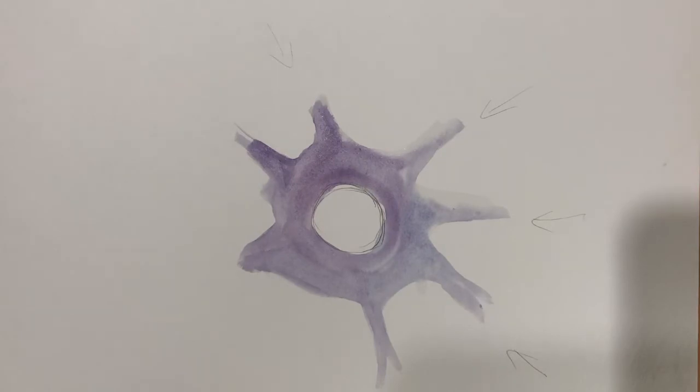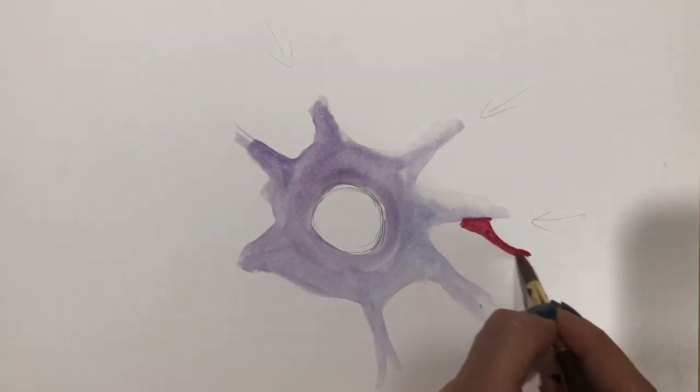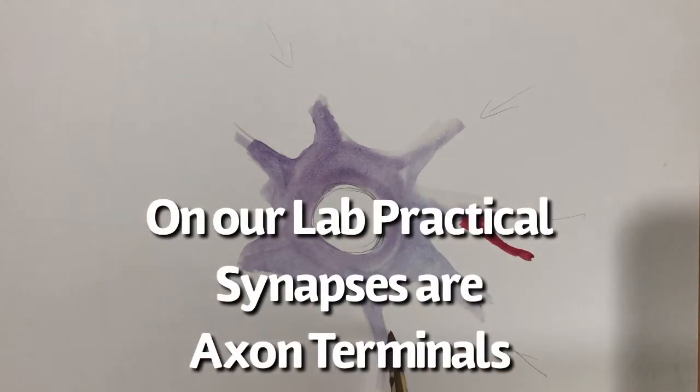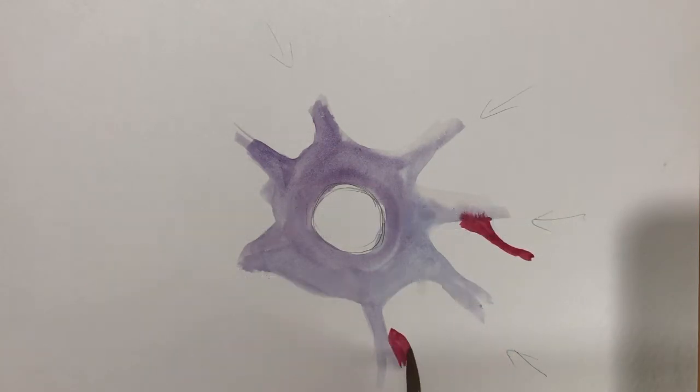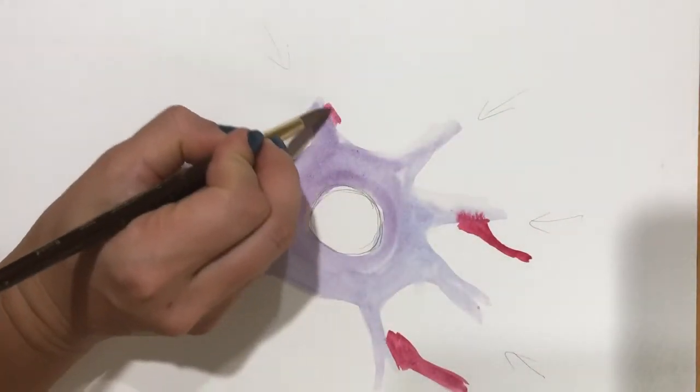Now if the signal is coming in from another neuron, it's going to have what is called a synapse. A synapse is the end of one neuron coming and attaching to these dendrites. So that would be a synapse. This would be a synapse. This one right here, we'll put another one in.